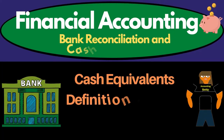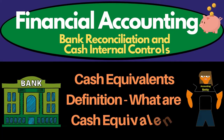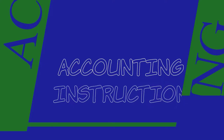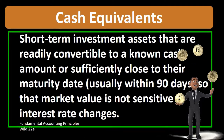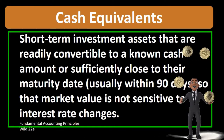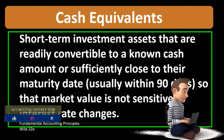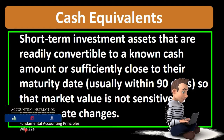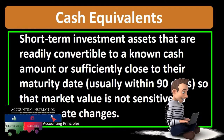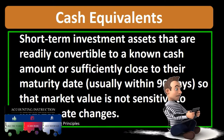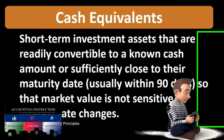Hello, in this lecture we will define cash equivalents. According to Fundamental Accounting Principles Wild 22nd Edition, the definition of cash equivalents is short-term investment assets that are readily convertible to a known cash amount or sufficiently close to their maturity date, usually within 90 days, so that market value is not sensitive to interest rate changes.